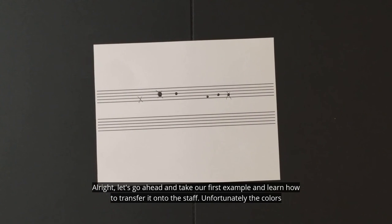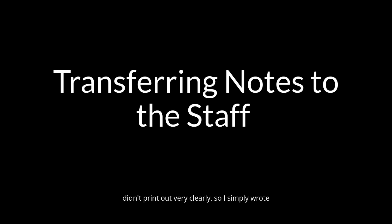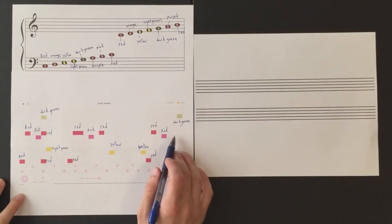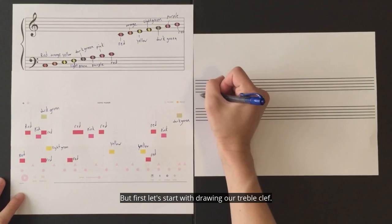All right, let's go ahead and take our first example and learn how to transfer it onto the staff. Unfortunately, the colors didn't print out very clearly, so I simply wrote the names of the colors next to the note heads or next to the blocks in Song Maker. All right, let's go ahead and get started. Remember, we are going to go from left to right, but first let's start with drawing our treble clef.